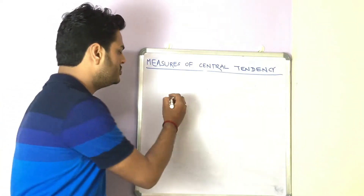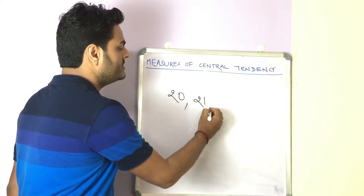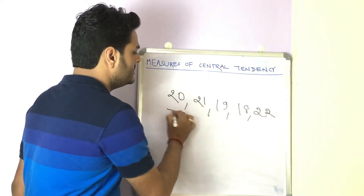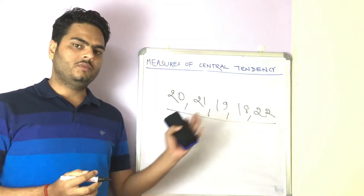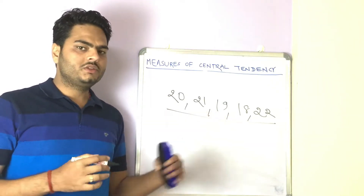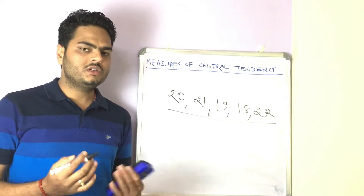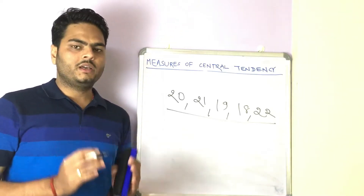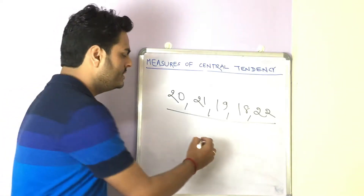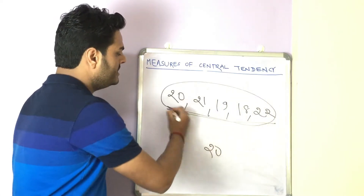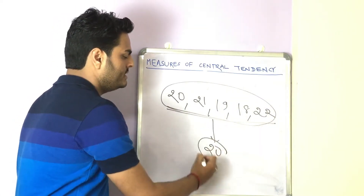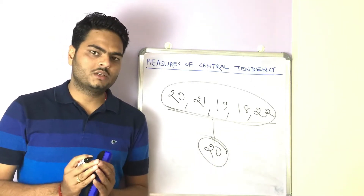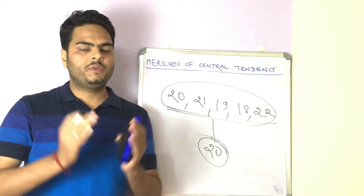So let's say these are the stock prices of your favorite stock in the last five hours — I'm just writing a few random numbers here. By looking at these numbers, you can very safely say that the stock is revolving around 20, or that the stock prices for the last five hours can be represented by the number 20. So all these five numbers can be represented by one number, 20. Any number that represents the population or chunk of numbers is called a measure of central tendency for the bigger population.